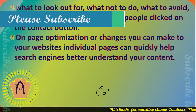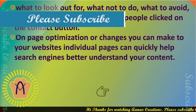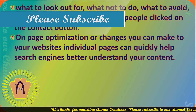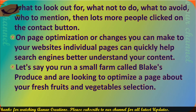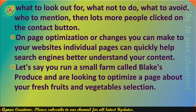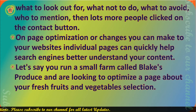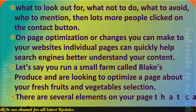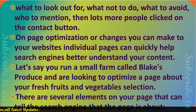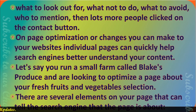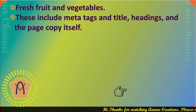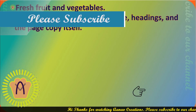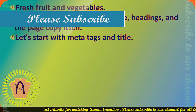On-page optimization, or changes you can make to your website's individual pages, can quickly help search engines better understand your content. Let's say you run a small farm called Blake's Produce and are looking to optimize a page about your fresh fruits and vegetables selection. There are several elements on your page that can tell the search engine what the page is all about — fresh fruit and vegetables. These include meta tags, title headings, and the page copy itself.